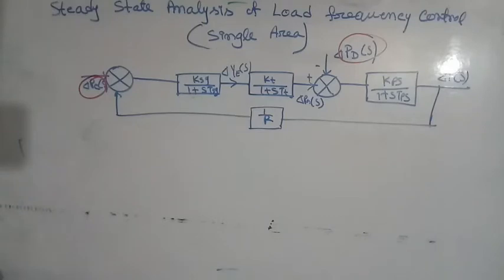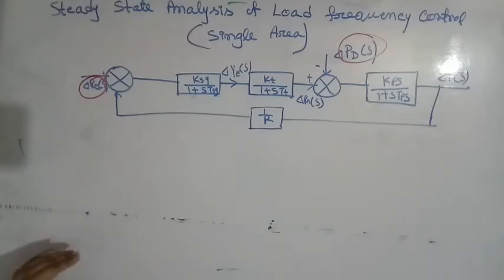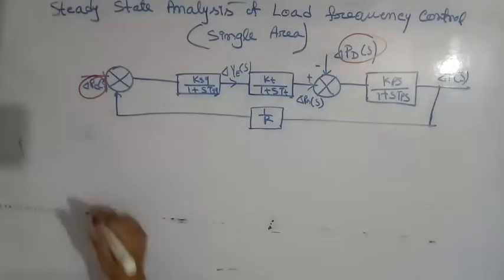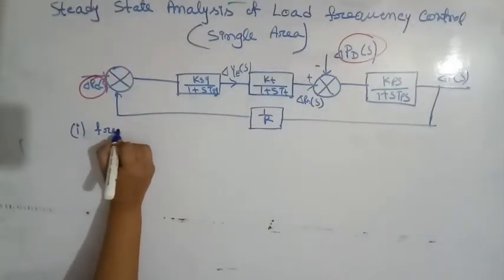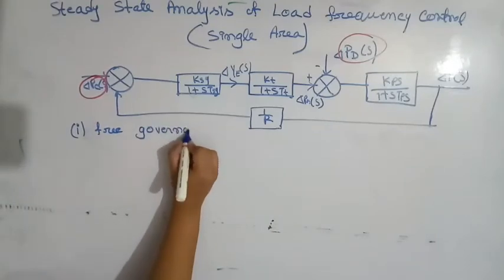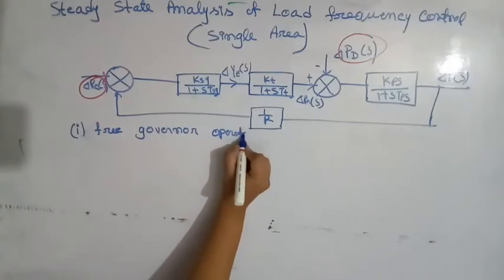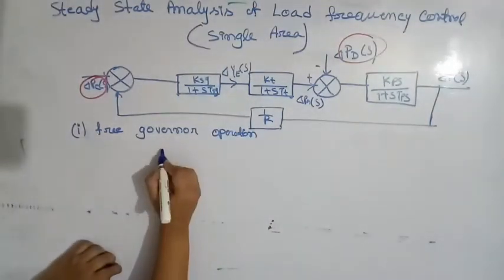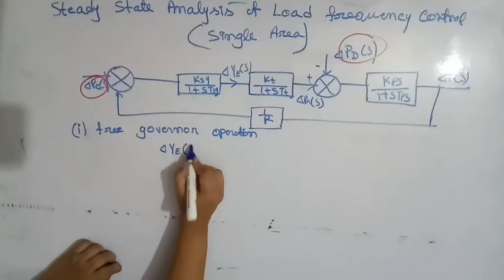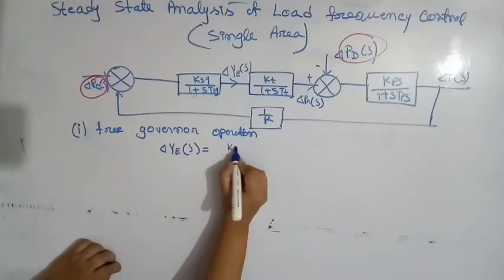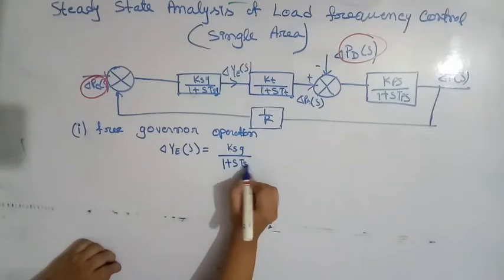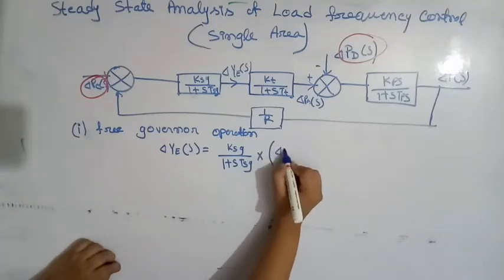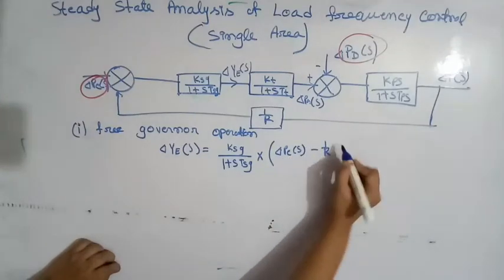For such operation, the steady state change in system frequency for a sudden change in load demand by an amount delta PD is equal to delta PD by X. Now first we analyze the steady state condition for free governor operation. From the first block, delta YES is equal to KSG divided by (1 + S·TSG) into [delta PC(S) minus (1/R)·delta F(S)].